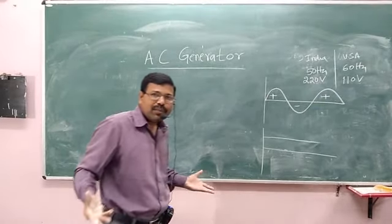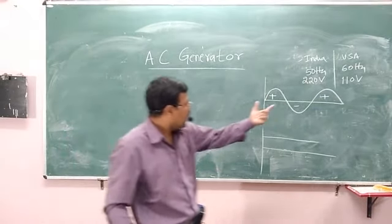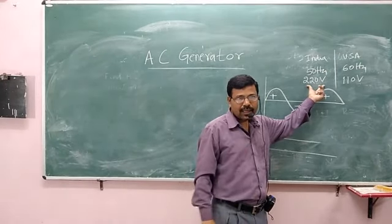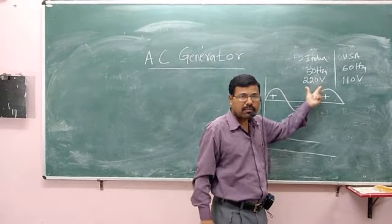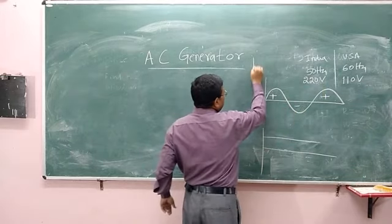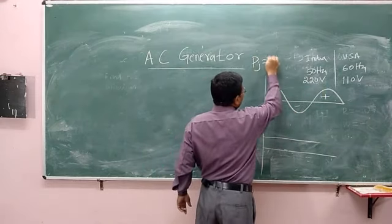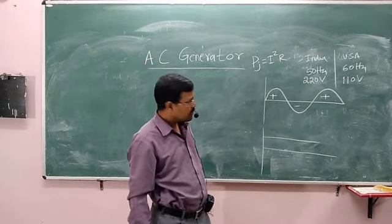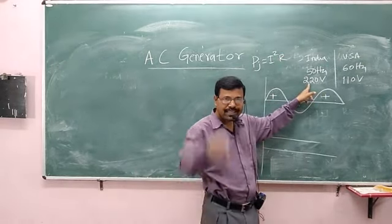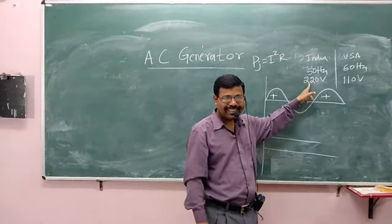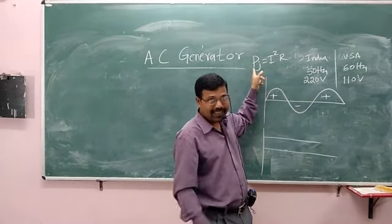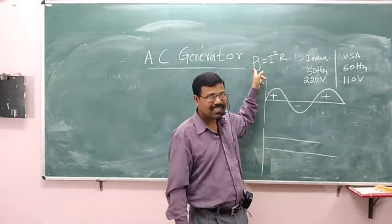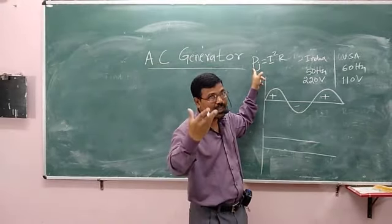Why this difference? Higher the voltage, less will be the current, and less will be the loss of power. The power loss is equal to I squared R. So higher the voltage, less the current, less the loss of power in wires.